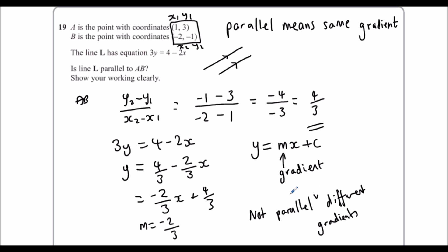I should write that as a proper sentence. I should say they have different gradients, or even because they have different gradients.